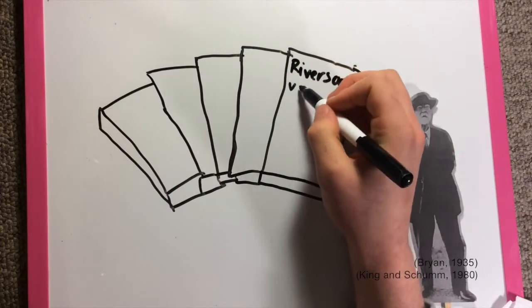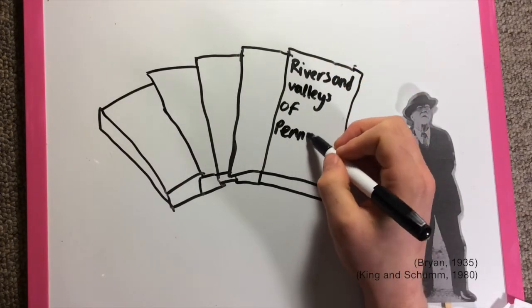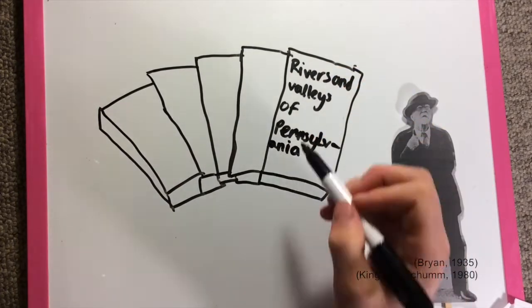In 1889, one of my most notable writings was published, The Rivers and Valleys of Pennsylvania.